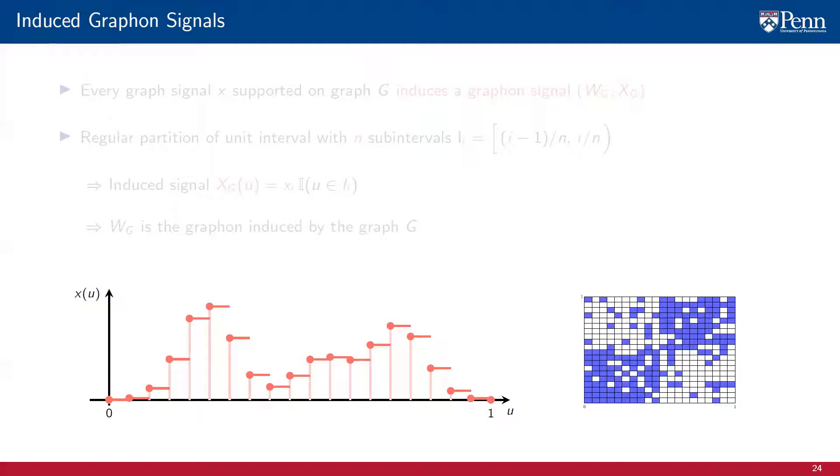To explain graphon signals as limit objects, we need the notion of induced graphon signals. This is a definition that we obtain by leveraging the definition of induced graphons. Formally, every graph signal x supported on the graph G induces a graphon signal X_G supported on the induced graphon W_G.